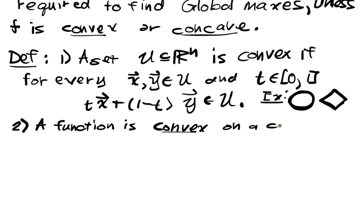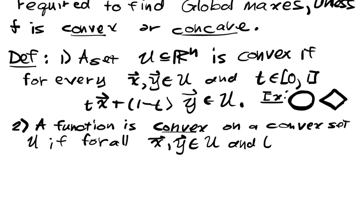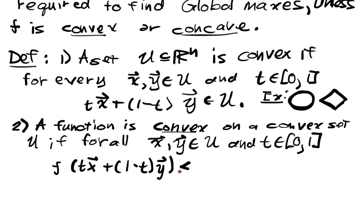Convex on a convex set u if for all x, y in u and t in [0, 1] we have that f of (tx plus (1 minus t)y) is less than or equal to tf(x) plus (1 minus t)f(y).